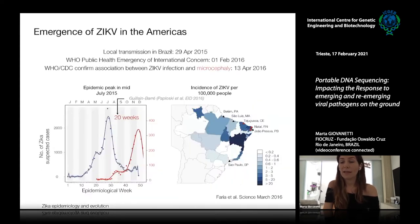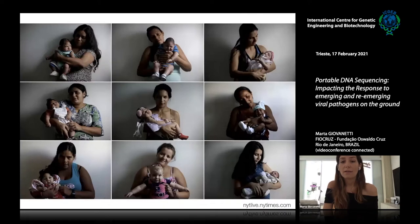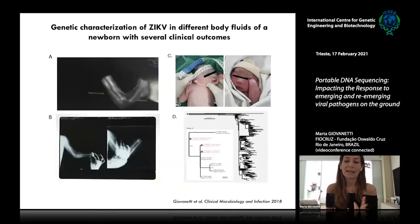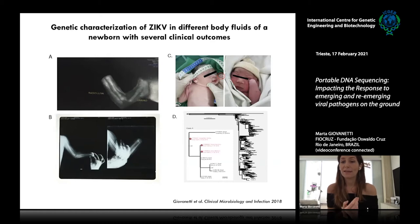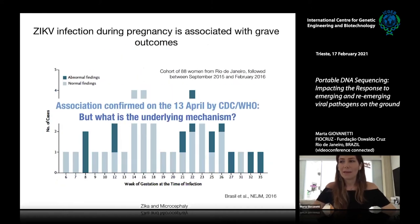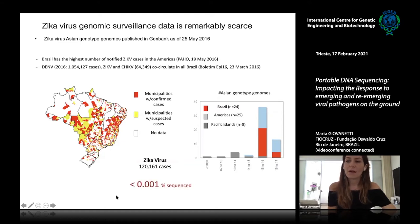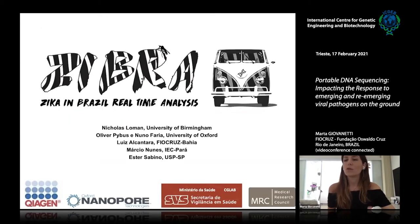On February 1, 2016, the WHO declared a Public Health Emergency of International Concern due to the exponential number of notified microcephaly cases. We had the opportunity to detect Zika virus in different body fluids of a newborn with severe outcomes, including microcephaly and amniotic band syndrome. For 100,000 notified cases, there was a real paucity of complete genome sequences from Zika virus, which is why we decided to perform genomic surveillance in the context of the ZEBRA project.